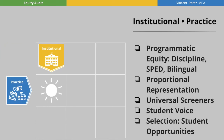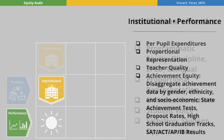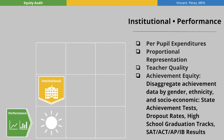Institutional practice consists of the measures in programmatic equity, proportional representation, and the use of universal screeners to engage student voice. For instance, how are students selected for AP or IB programs at the secondary level? The traditional measures will be used for institutional performance. In addition, per-pupil expenditures, proportional representation, and teacher quality are also fine measures.